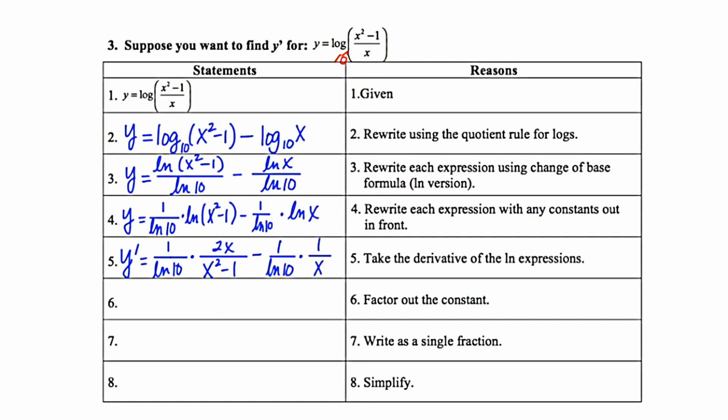Step 6 says to factor out the constant. So let's note the fact that I've got the same constant in both terms. I've got it here and I also have it here. So I'm just going to write that out in front just to make it a little bit more simplified.